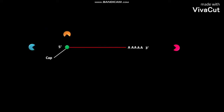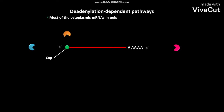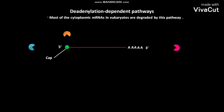The second pathway for eukaryotic mRNA degradation is the deadenylation-dependent pathway. Most of the cytoplasmic mRNAs in eukaryotes are degraded by this pathway.